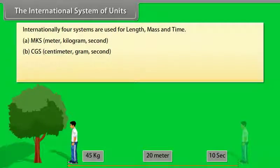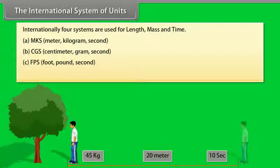CGS system, that is centimeter, gram, and second system. FPS system, that is foot, pound, second. SI system, that is international system of unit.